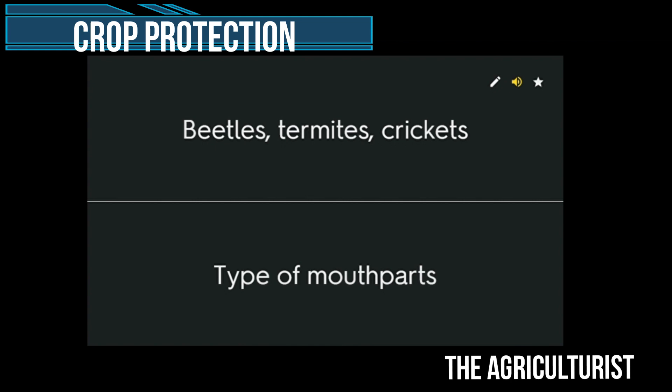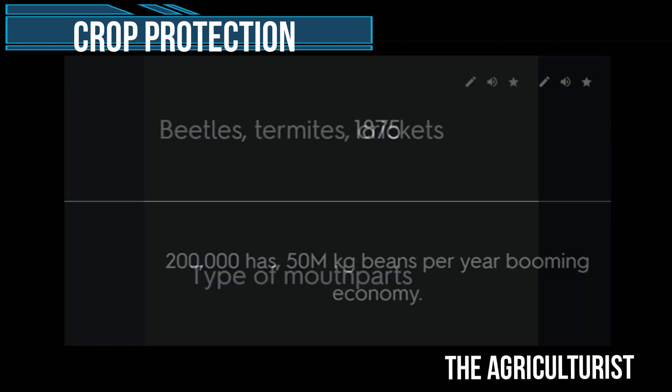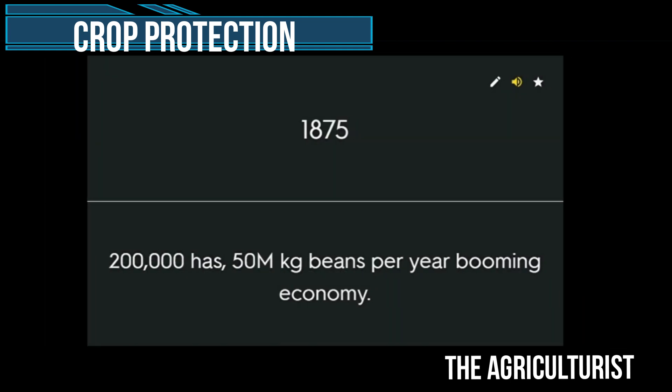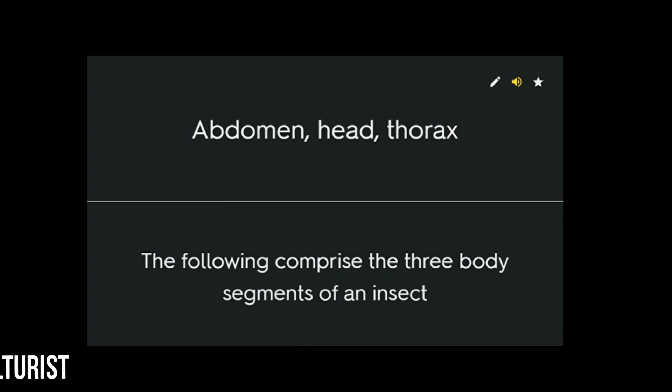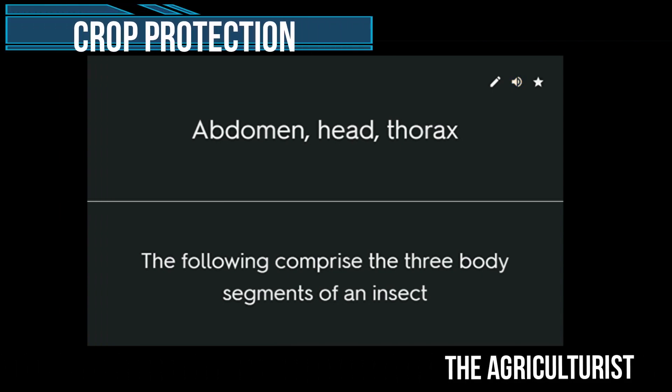Beetles, termites, crickets — type of mouthparts: mandibulate. 1875: 200,000 hectares, 50 million kg beans per year — booming economy. Abdomen, head, thorax — the three body segments of an insect.